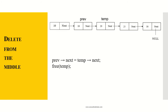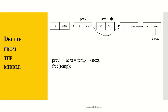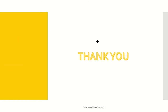To delete: previous->next = temp->next. This breaks the link from the previous node to temp and points it directly to temp's next node, bypassing the node to be deleted. We then call free(temp) to release that node's memory. This is how we insert and delete elements in the middle of a singly linked list. Thank you.